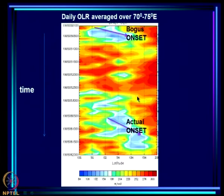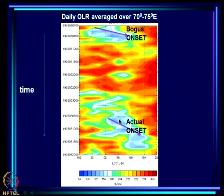The clear dry spell extended not only over Kerala but over all of India — this was the heat wave period. Then came the actual onset in multiple propagations: one around May 30th and soon after another just north of the equator, which then moved northward. The actual onset date was June 9th, when the rain belt reached Kerala. Between the bogus and actual onset, the system had changed completely.